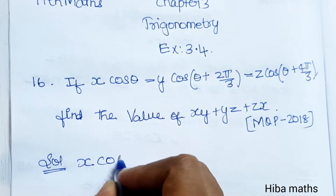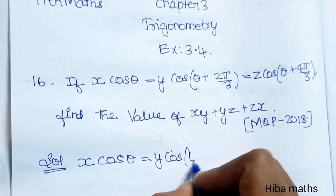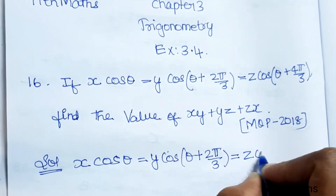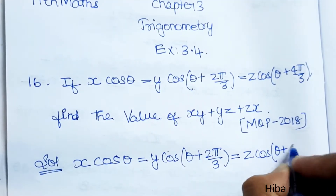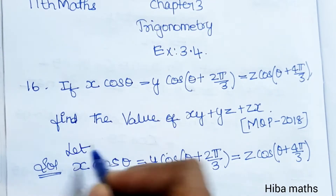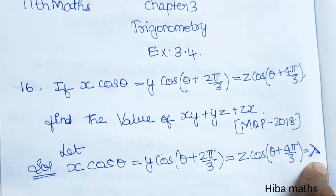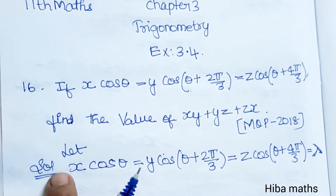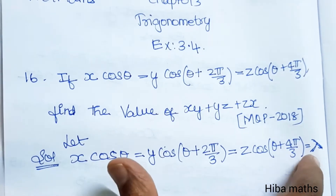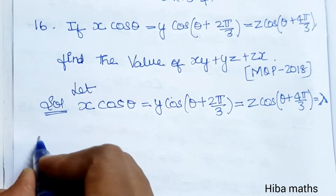Given: x cos θ = y cos(θ + 2π/3) = z cos(θ + 4π/3). Let us introduce a variable — let each of these terms be equal to lambda (λ). Now we compare each term with lambda one by one: first term, second term, then third term.